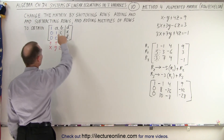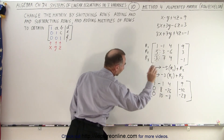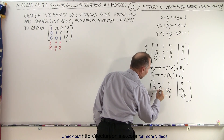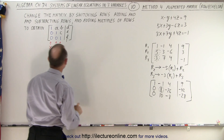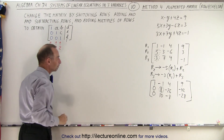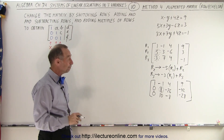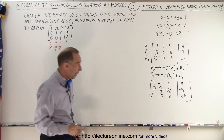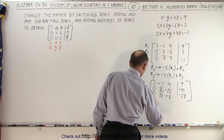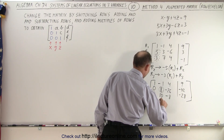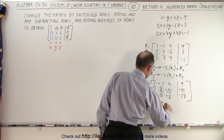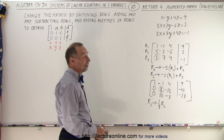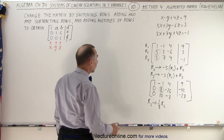Now, looking at the second column, I don't care about the -1 in Row 1, but the 8 in Row 2 needs to become a 1. To do that, I simply multiply the entire Row 2 by 1/8, or equivalently divide the whole row by 8. So I take Row 2 and replace it by 1/8 times Row 2.